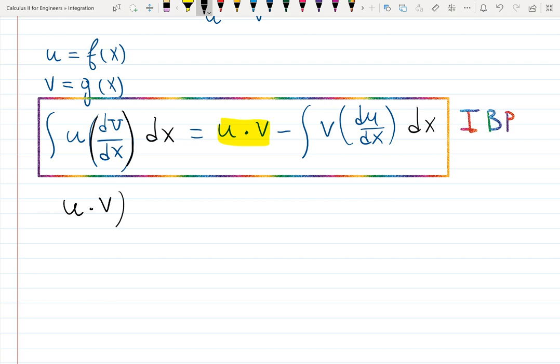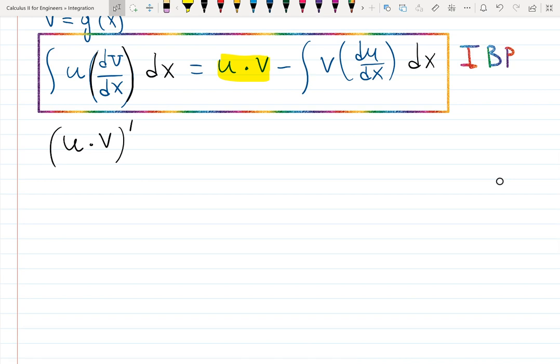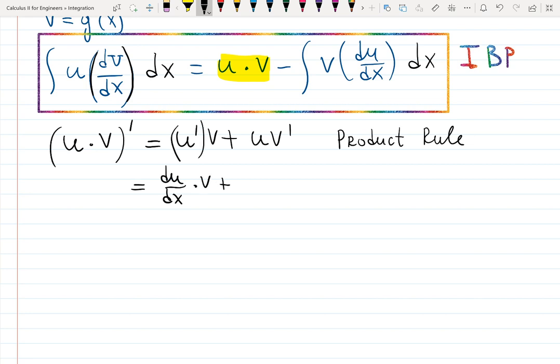What is the derivative of the product u times v? We need to remember not only product rule but also that u and v both depend on x, so chain rule is involved. Product rule says (u·v)' = u'v + uv'. If you want to be precise and show differentiation with respect to x, then let's write it as du/dx times v plus u times dv/dx. That's the product rule. Let's substitute this result.